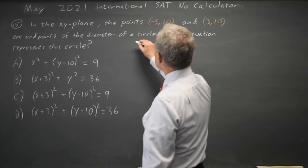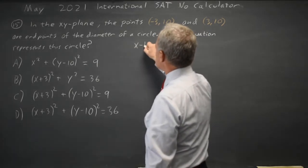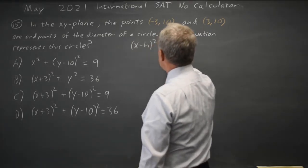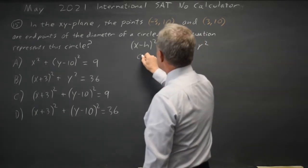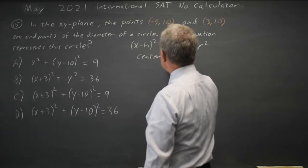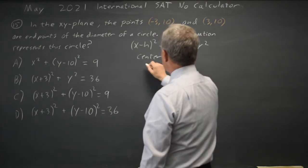And we know the general equation of a circle is x minus h squared plus y minus k squared equals r squared, where the center is h,k and the radius is r.